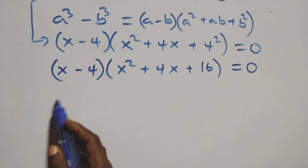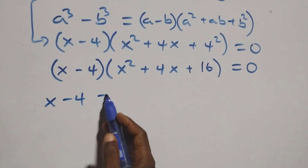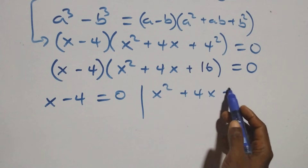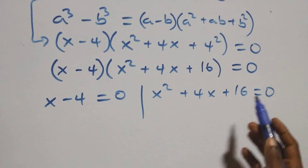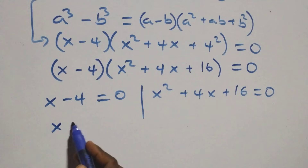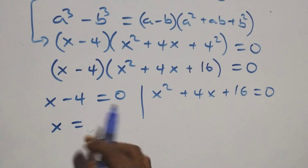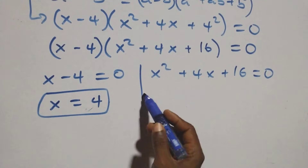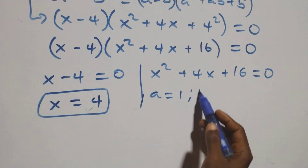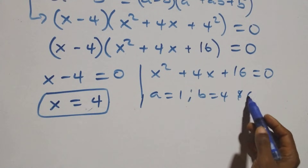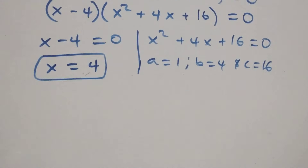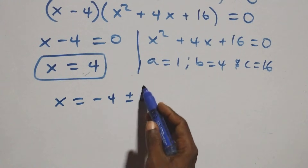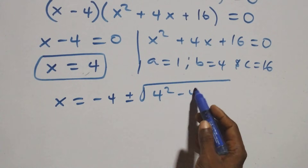Solving from here: x minus 4 equals to 0 gives x equals to 4, which is also a real solution. Then for the quadratic equation x² + 4x + 16 = 0, we have a equals 1, b equals 4, c equals 16. Applying the quadratic formula: x equals minus 4 plus or minus square root of 4², minus 4 times 1 times 16, over 2 times 1.